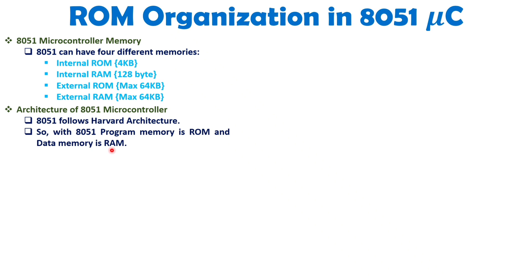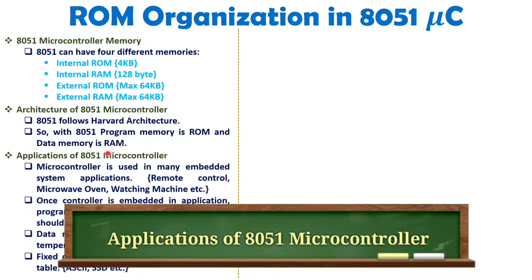The reason for this is that whatever program we have for the microcontroller should be fixed — it will never change, it will just execute instructions one by one. But data may change. In various applications you will have different data, and you may need to change data with respect to the execution of the program. That's why data is volatile and is stored inside RAM.